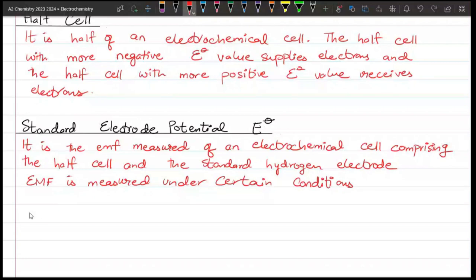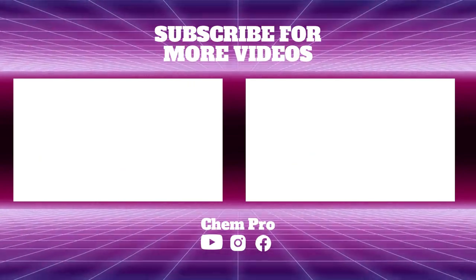What is the condition? The temperature is 25 degrees Celsius and the concentration is 1 mole per dm cube. When you measure EMF, you will see different ions in the solution. So every ion concentration is 1 mole per dm cube.